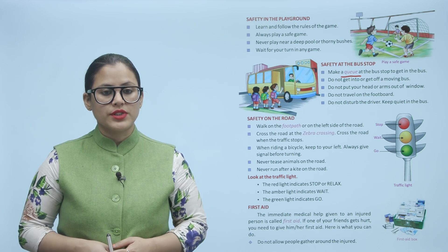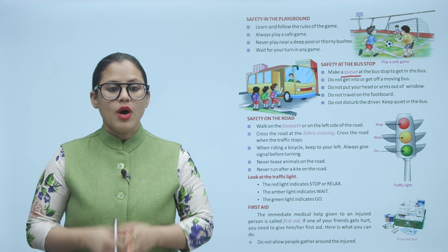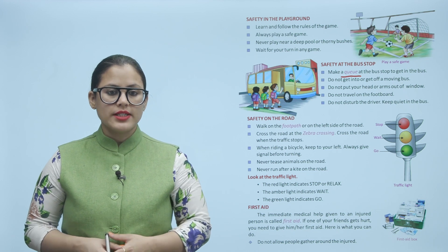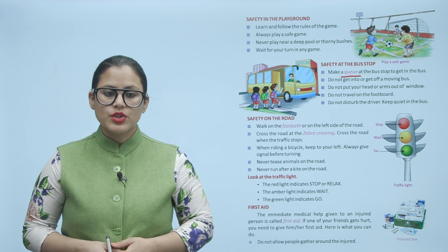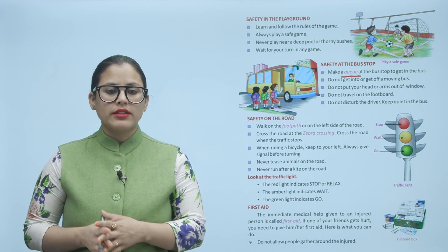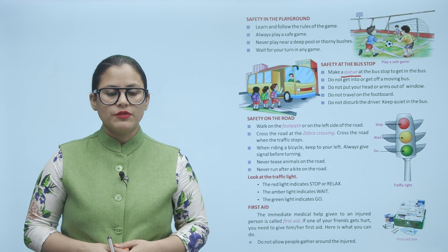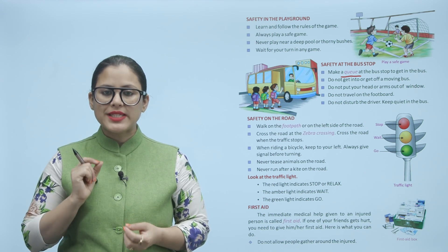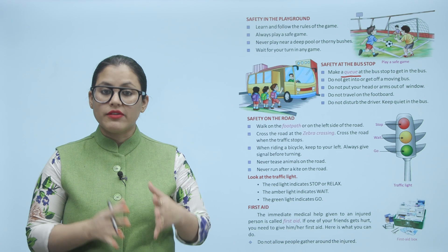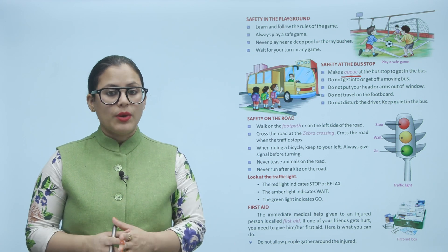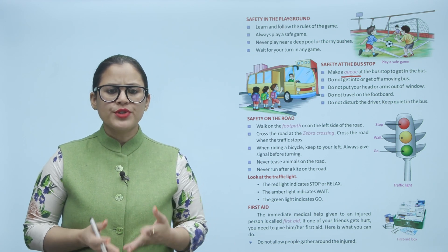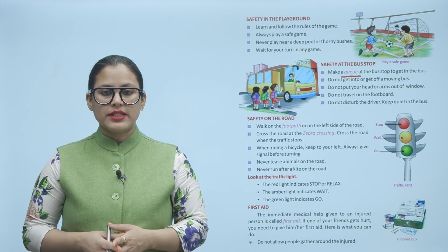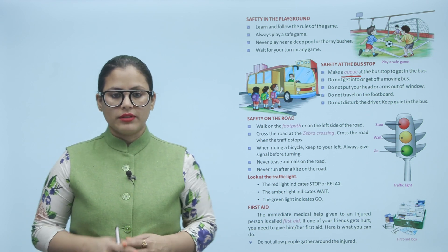The immediate medical help given to an injured person is called first aid. If one of your friends gets hurt, you need to give them first aid. Here is what you can do: do not allow people to gather around the injured person. First aid ka matlab hota hai — koi bhi injured person ko jo sabse pehli help dee jaati hai doctor ke aane se pehle. Sabse pehle toh injured person ke aas paas bheed ikhatti na hone dein.